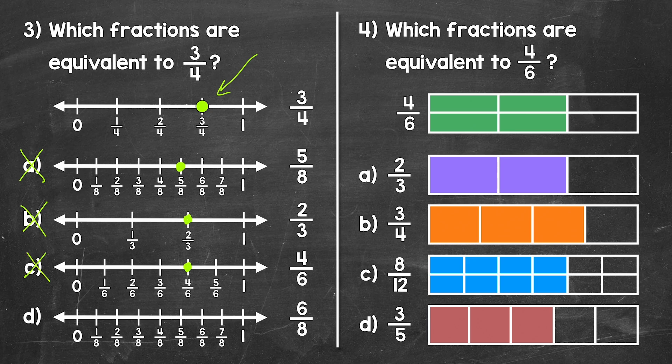I do want to mention, looking at 2 thirds above, notice that 4 sixths and 2 thirds are equivalent to each other — but that's not our question here. Lastly, let's look at D, where we have 6 eighths. 6 eighths is right here on the number line, and we can see that it's at the same place as 3 fourths. 6 eighths is equivalent. So for number 3, 3 fourths and 6 eighths are equivalent fractions.